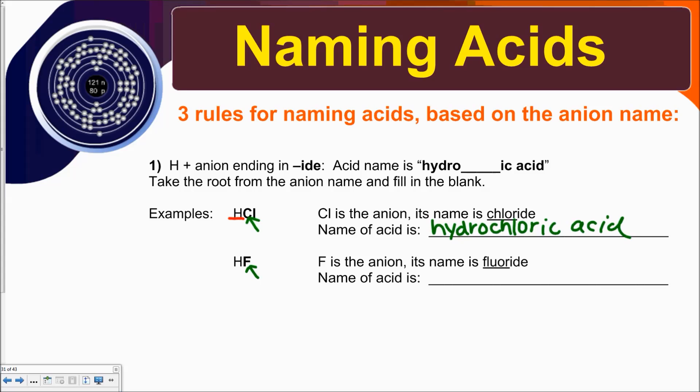For the next example, the anion is fluoride, so the name of the acid is hydrofluoric acid.